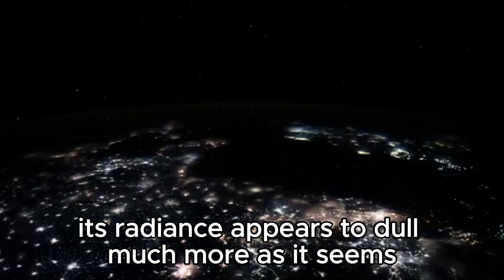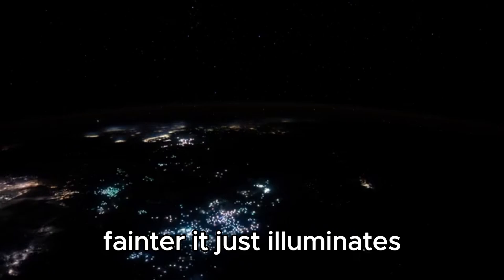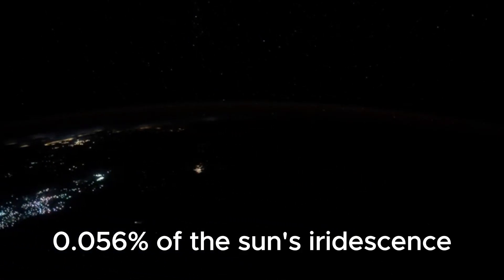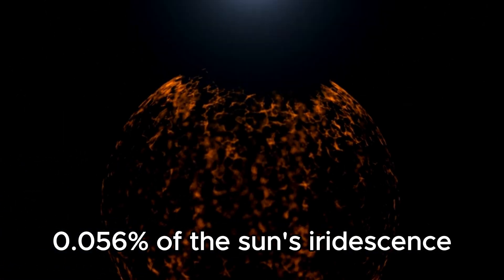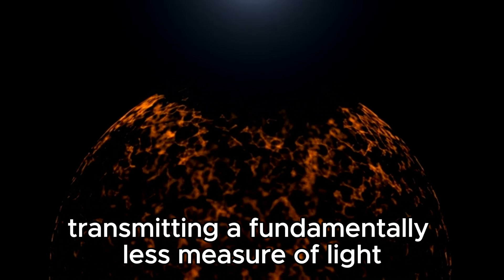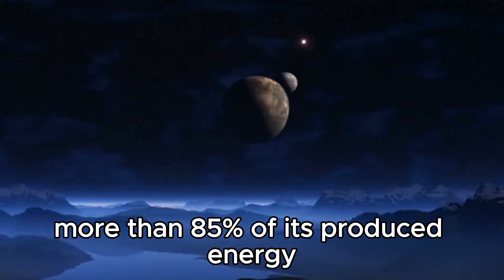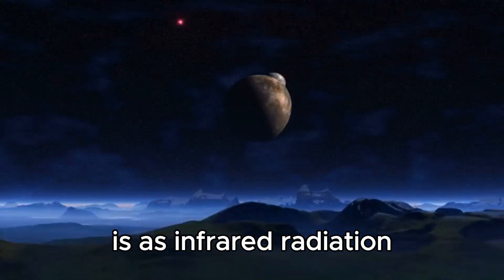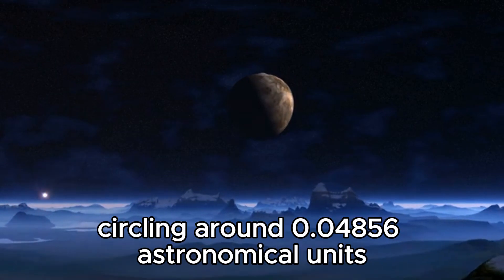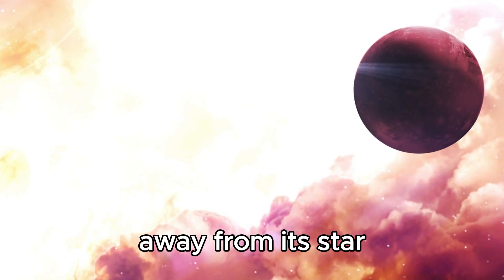in the visible light range, its radiance appears to dim much more as it seems fainter. It only illuminates 0.056% of the sun's luminescence in the visible light range, transmitting a fundamentally lesser amount of light energy when compared to the sun. More than 85% of its produced energy is as infrared radiation.